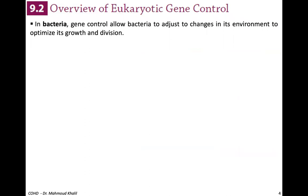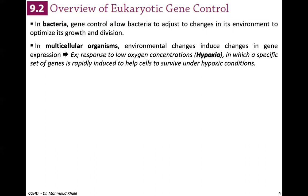Looking at the overview of eukaryotic gene control: in bacteria, gene control allows bacteria to adjust to environmental changes to optimize growth and division. Bacteria have very fast gene regulation because they are always subjected to many environmental changes. In multicellular organisms, environmental changes can also induce changes in gene expression — for example, the response to low oxygen concentration, which is hypoxia, may result from an environmental change.